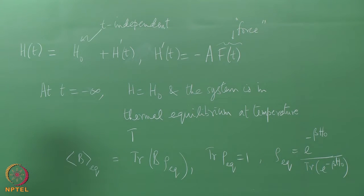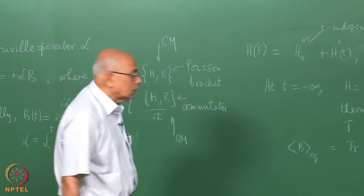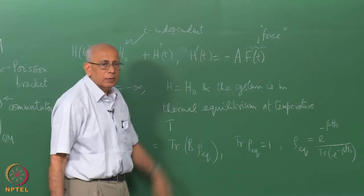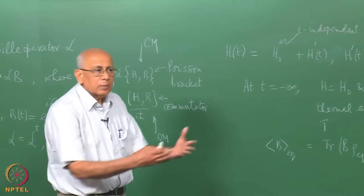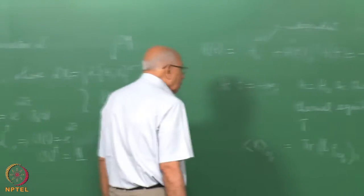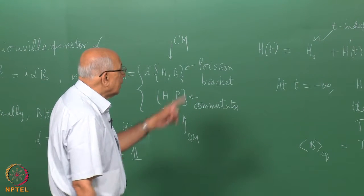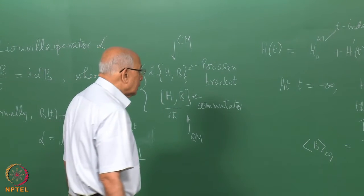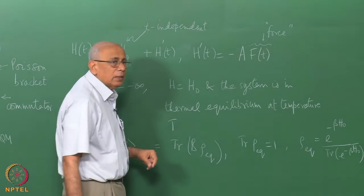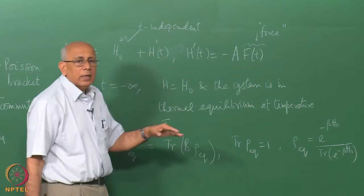The system is in equilibrium at t = -∞; you switch on the perturbation and ask what is the average value of any quantity of interest. Take a generic quantity B — it does not have to be A itself, though B = A is a special case. We want to know the expectation value of B away from equilibrium in the presence of this perturbation, and we assume that the perturbation is small in the sense that second-order terms will be neglected; we want the correction to first order.